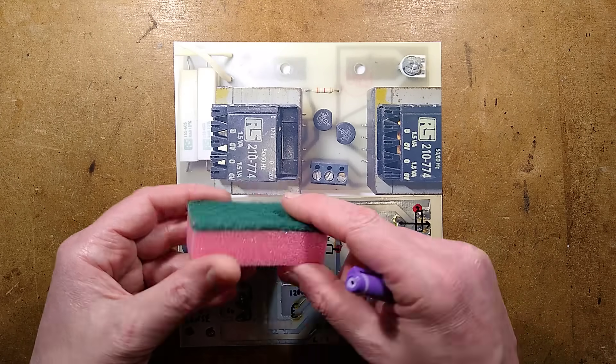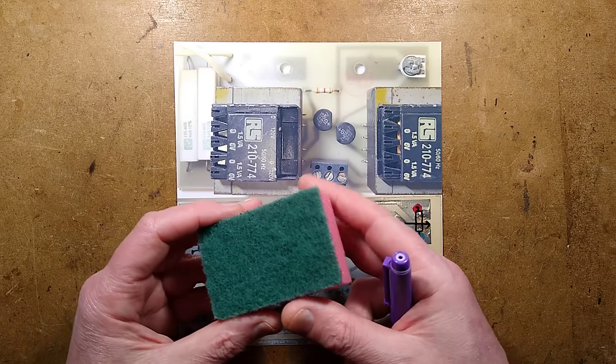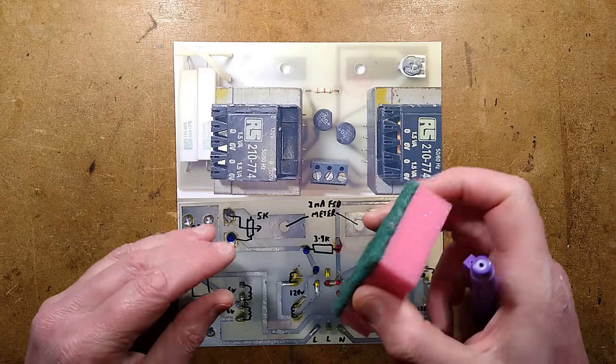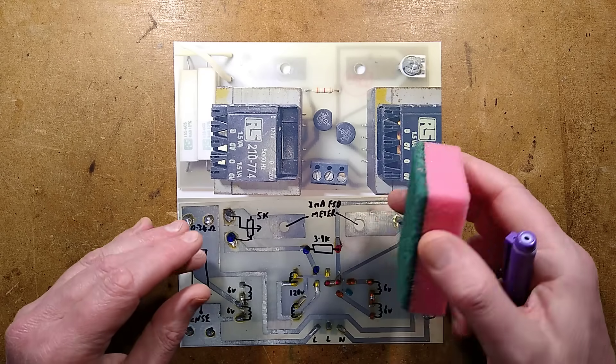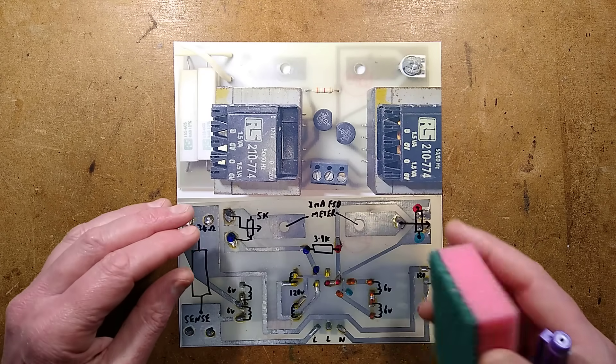I actually use these standard pads to clean my own circuit boards when I'm processing them, because it's a very good way of taking off the oxide layer and revealing shiny copper for the photosensitive coatings.